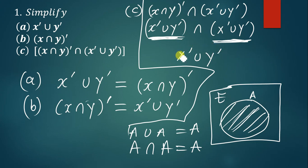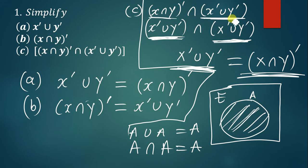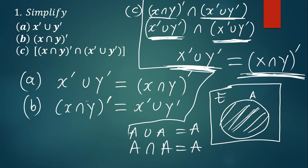You can leave it like that, or go further and say the final answer is x complement union y complement. Using De Morgan's rules, instead of working with this part, if you decide to start by factorizing the complement, the solution you get is the same.